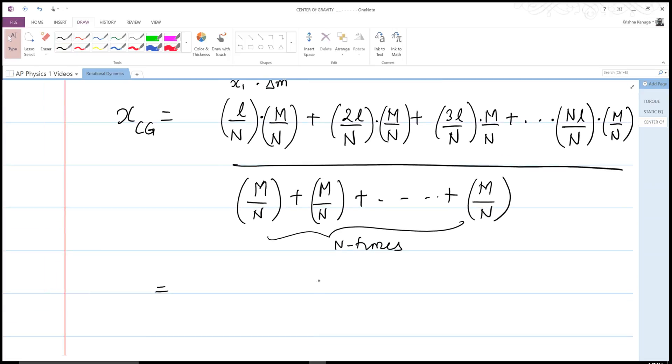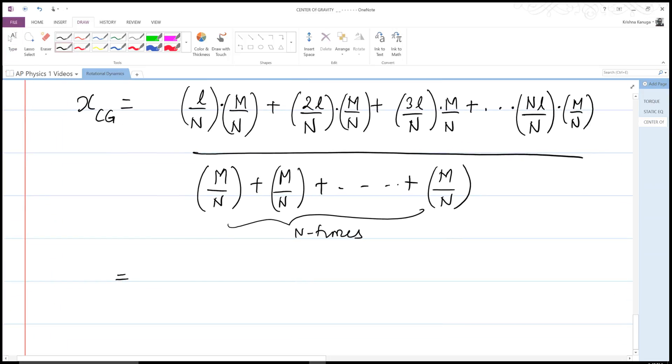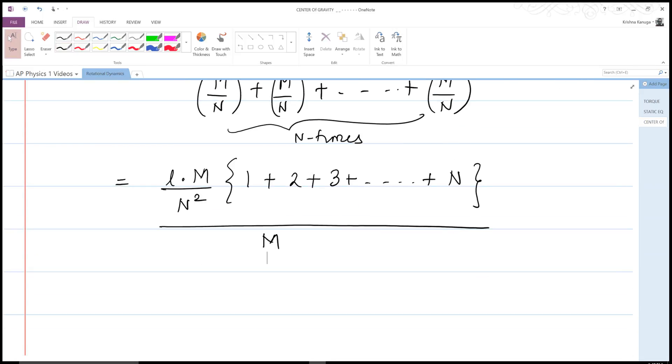We have this. Now what we can do is we can factor out a bunch of things from the numerator as well. My numerator gives me L times M over N squared, and inside I have 1 plus 2 plus 3 plus dot dot dot, all the way to N, where N is this gigantic number. My denominator has simplified to simply M.